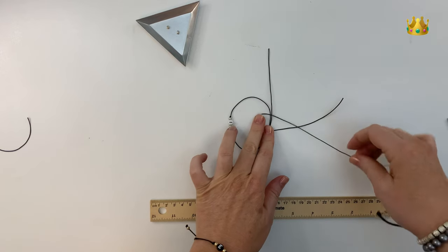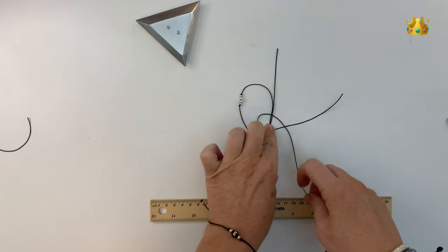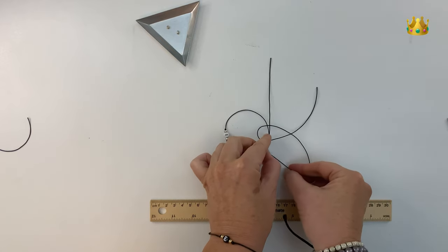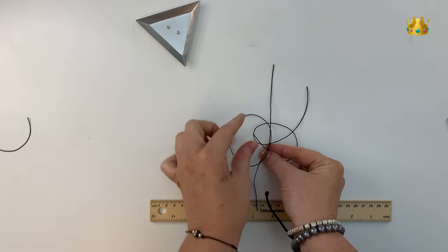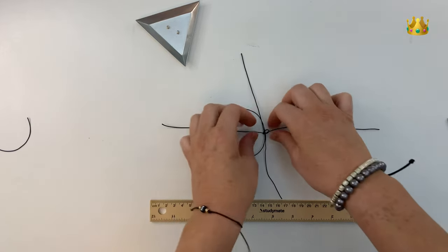And now bringing the right side down over that other cord, and then gently passing it underneath to come up that loop on the left hand side. Pulling it nice and tight.